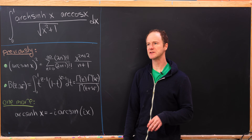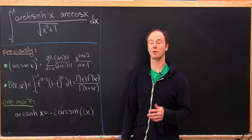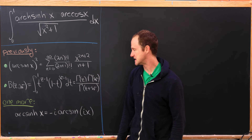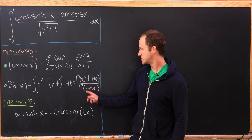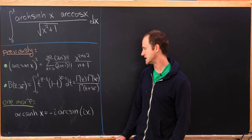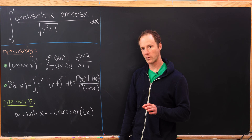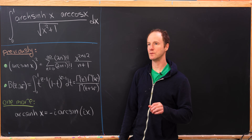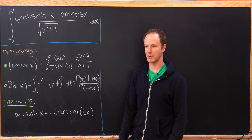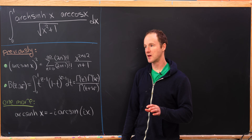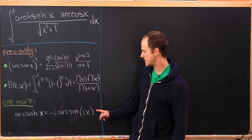We're also going to use something about the beta function, which we proved when working with the gamma function. Beta of z, w is defined as a specific integral, which is also equal to gamma(z)·gamma(w) over gamma(z+w). Furthermore, we're going to use one more identity which relates the inverse hyperbolic trig function with the regular inverse trig function.